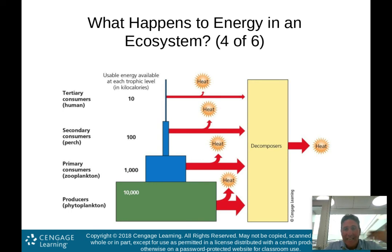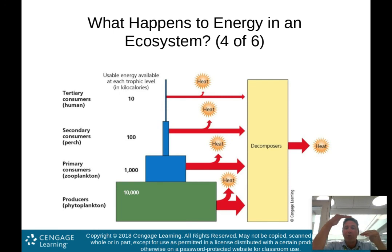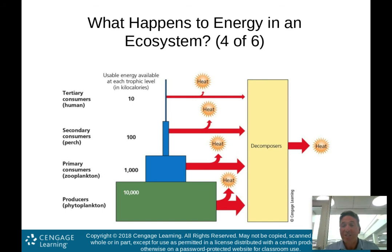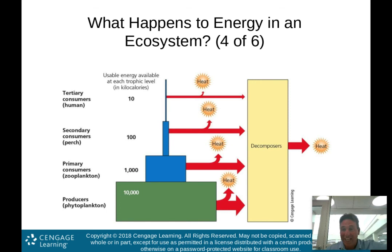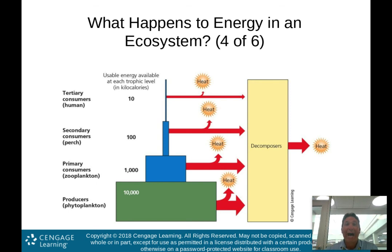If we consider beef as a secondary consumer, the 10,000 kilocalories is down to 100. We have to eat more meat to get the same amount of energy as we would eating just plants. As you go up through the trophic levels, you're losing 90% of the energy — only 10% is available at each additional trophic level. This is why eating lots of meat results in a high ecological footprint. If you just eat plants, you get a lot more energy for the same amount of biomass.